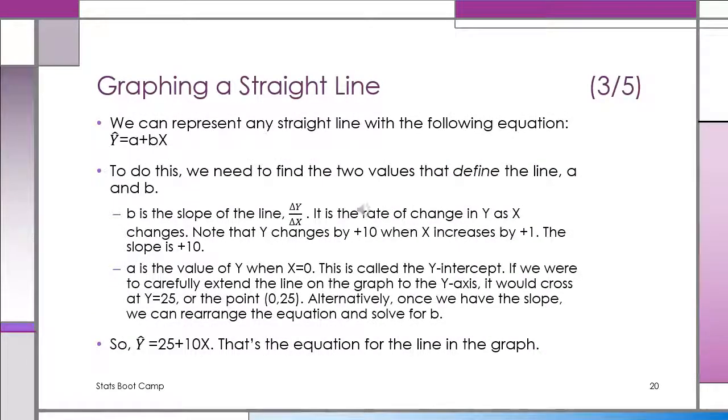A straight line is defined by a slope, that's a change in Y over a change in X. It shows you how much Y changes as X changes. In the previous problem, the grade, the Y, changed by 10 points every time hours studied X changed by 1. So we say the slope is plus 10. Again, it's the change in Y, which is the change in the grade, over change in X, change in hours studied.